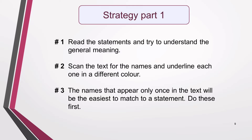Now let's look at the strategy for answering this type of question. Start by carefully reading the statements and try to understand what they mean. Don't spend too long on this, but get the general meaning if you can. Then scan the text for the names and underline them — do this before reading the text. You'll find them extra quickly by focusing on the capital letter at the start of the name. Some names will appear more than once, so using a different coloured pen for each name is very helpful. Ignore any names not in the list of answers. The easiest names to match to a statement are those that appear only once in the text — do these first.